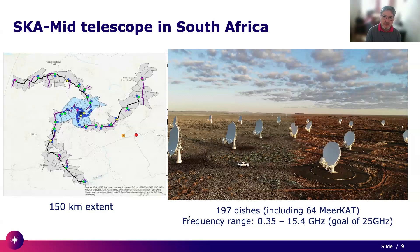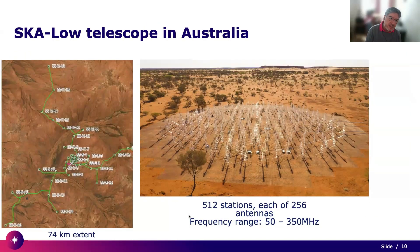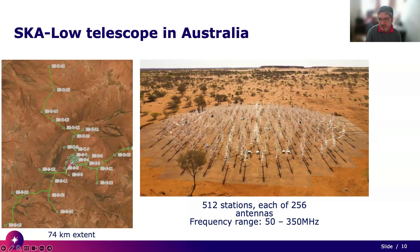The SKA-Mid telescope, which will be in South Africa, has a 150-kilometer extent and will be made of about 200 dishes, including the 64 MeerKAT dishes. The frequency range it observes is between 350 MHz and 15 GHz. On the other hand, the SKA-Low telescope will be located in Australia and has a 74-kilometer extent, with 512 stations each having 256 antennas, covering another frequency range.